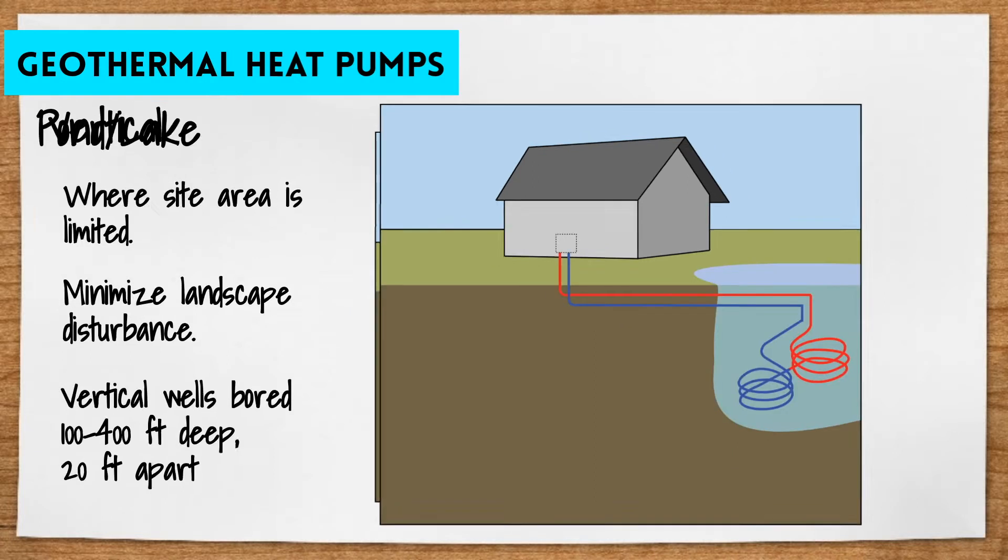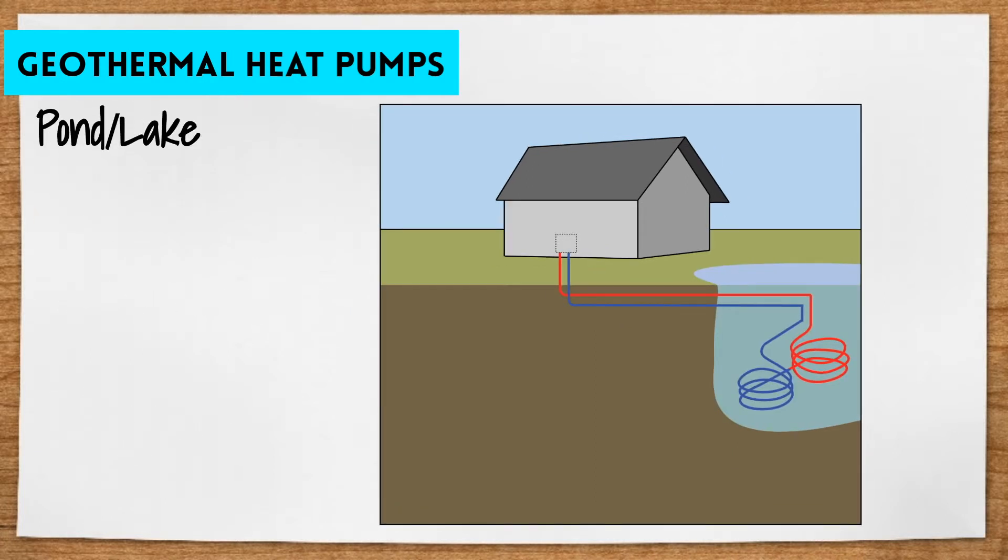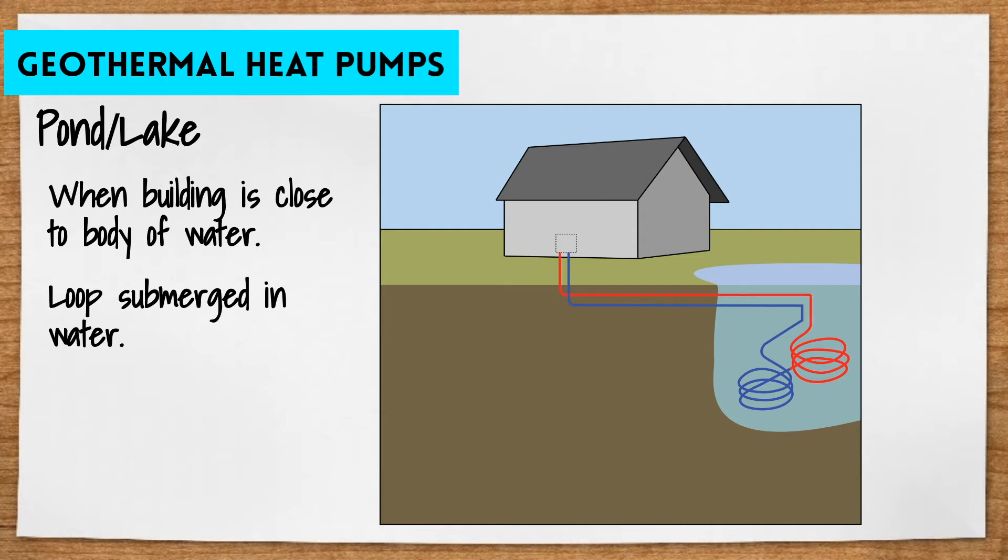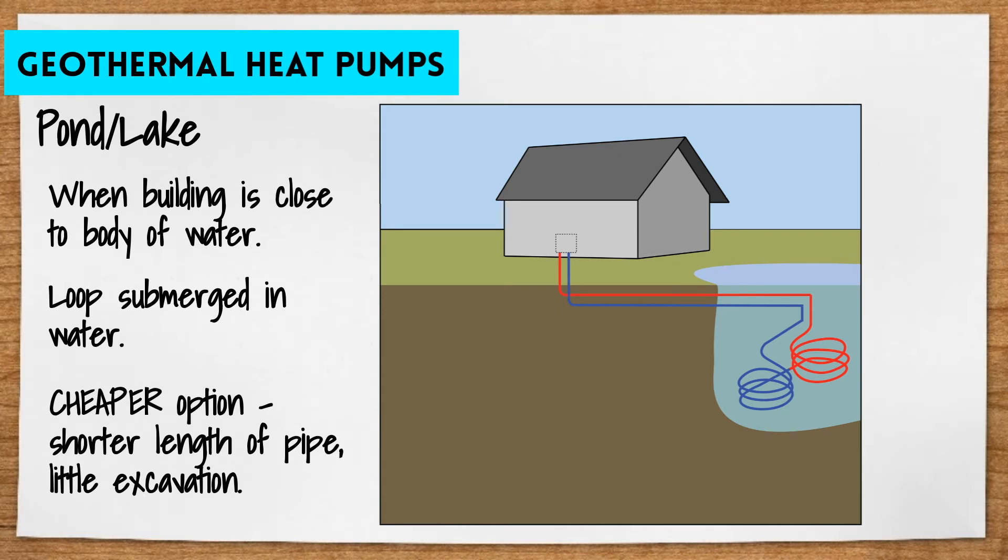The third configuration, pond or lake, can be used when the building is close to a large body of water. The loop is submerged in the water, which will actually conduct heat much faster than the soil. The loop should always remain at least eight feet under the water to prevent freezing. This option requires a much shorter length of pipe and little excavation, making it a much cheaper option if the site can allow for it.